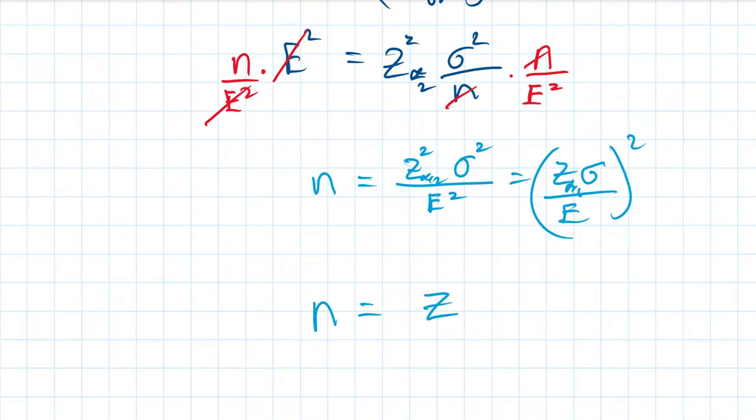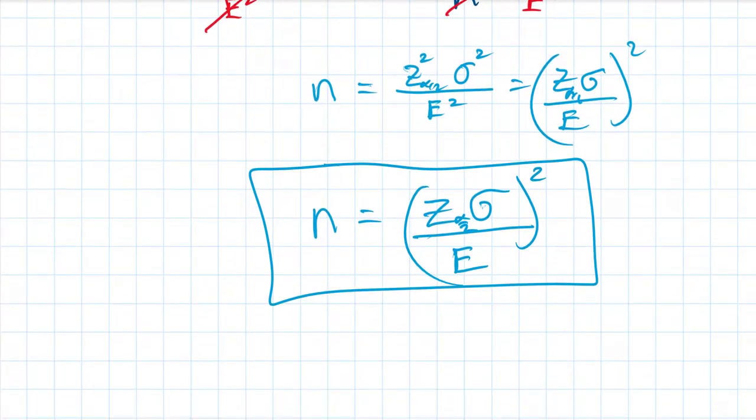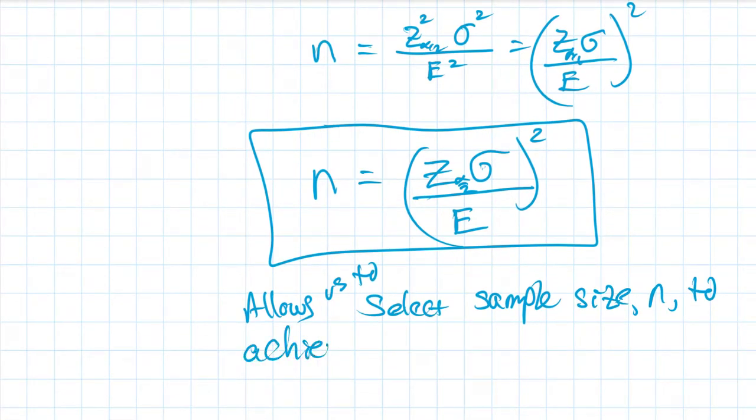Assuming that we know what the standard deviation is for the population. So we're taking those two units and we're looking to meet some desired margin of error. This right here allows us to select the sample size and to achieve the desired margin of error.